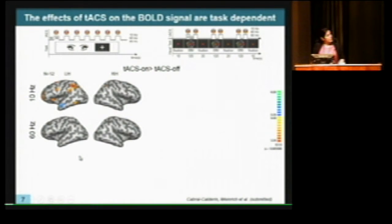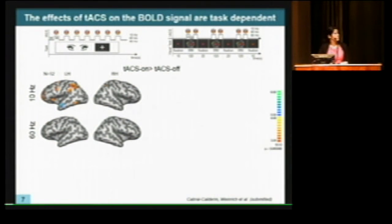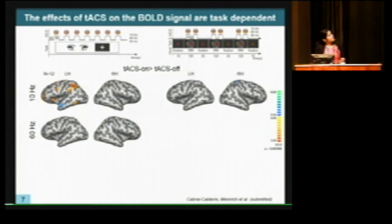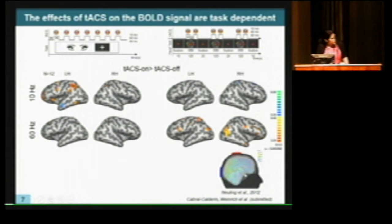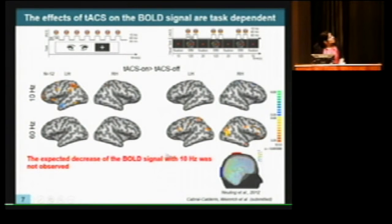With a different visual task — same stimulation protocol of 30-second on versus off blocks — the picture is completely different. Now 10 Hz TACS only slightly decreases activity and the previous map is no longer visible, while 60 Hz TACS is more effective at modulating activity in visual areas. However, in neither condition do we see an increase in BOLD signal in areas close to the electrodes or primarily targeted by the stimulation.